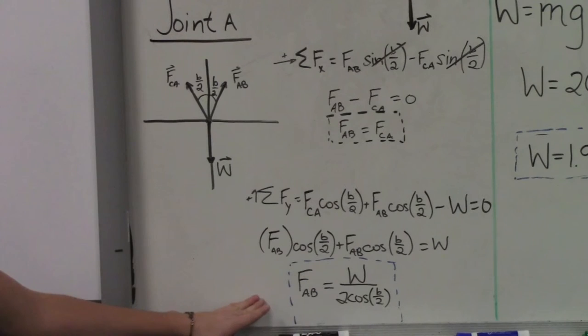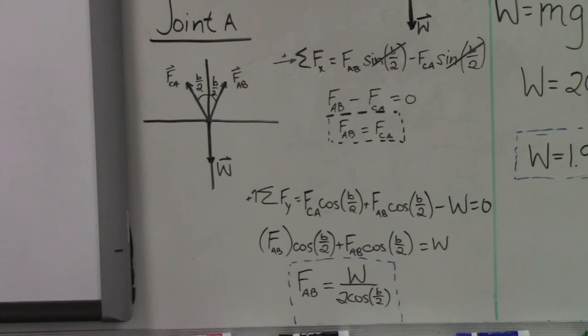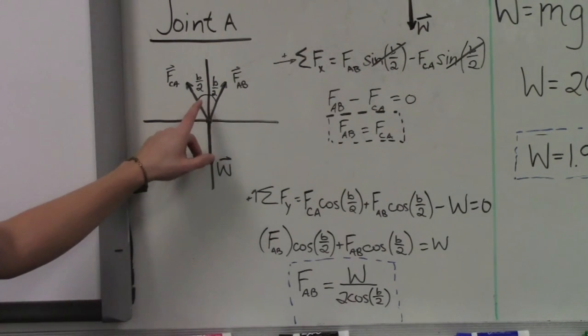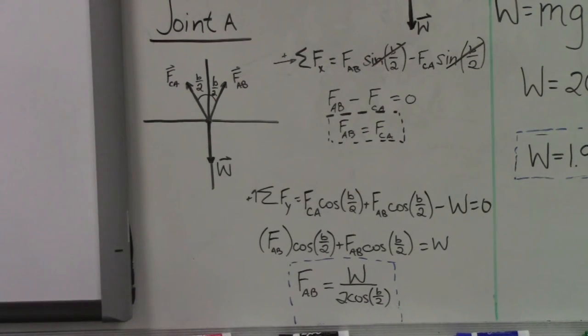We can come up with this equation, which we eventually will use to solve for the force AB on our load cell. Given that we know what the weight is, we solved for that earlier. And given that the angle AB is a bisection of B, so it will just be B over 2.